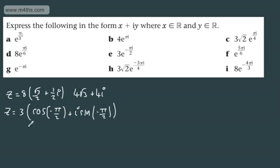The cosine of minus π by 2 is going to be 0. So z is going to be equal to 3 lots of 0. The sine of minus π by 2 is minus 1. So we end up now with minus i. So we can see now that z is going to be equal to minus 3i.